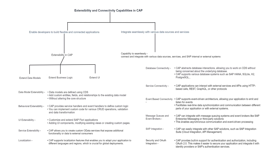Now we will go through the connectivity capability in CAP. Connectivity helps you integrate seamlessly with various data sources, services, and SAP internal or external systems. The first type is database connectivity. CAP abstracts database interactions, allowing you to work with CDS without being concerned about the underlying database. Multiple databases are supported, such as SAP HANA, SQLite, H2, and PostgreSQL.